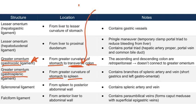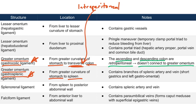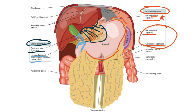The distinction between intraperitoneal and retroperitoneal with reference to the ascending and descending colon will make more sense in a few slides. The ascending and descending colon are retroperitoneal and do not connect to the greater omentum. The gastrosplenic ligament contains branches of the splenic artery and splenic vein — specifically the short gastric artery and vein and the left gastroomental artery and vein. Another name for gastroomental is gastroepiploic.